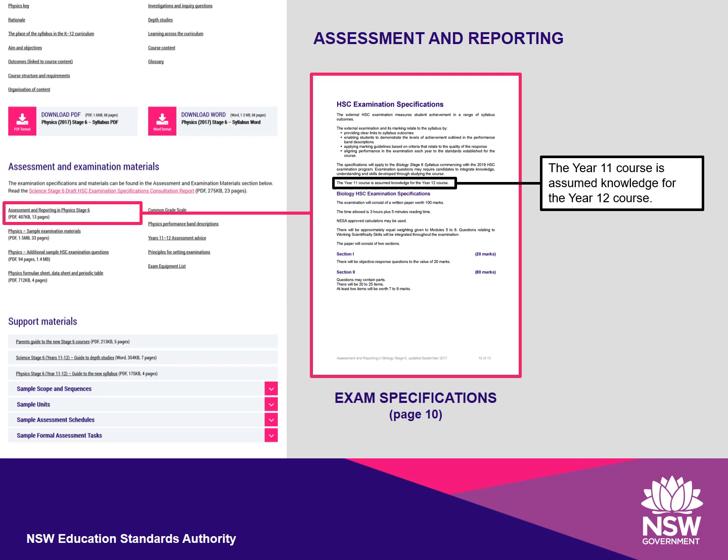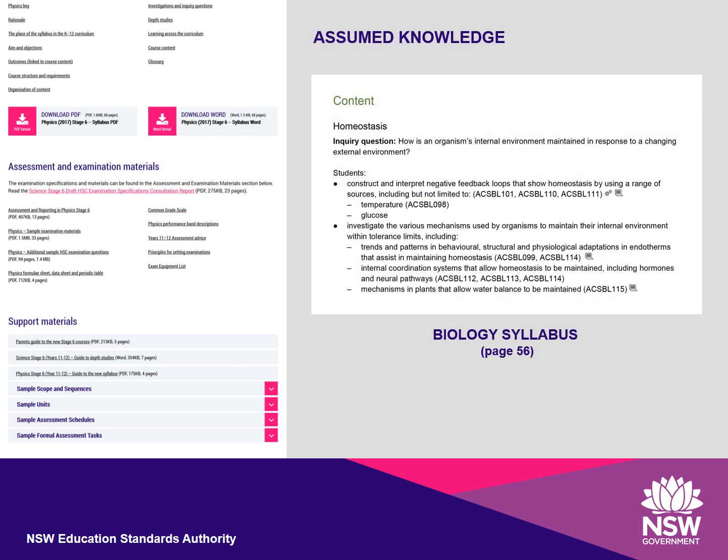Year 11 course is assumed knowledge for the Year 12 course. This means that Year 11 course content forms part of the knowledge required for students to demonstrate a deep understanding of Year 12 content. For example, homeostasis is a conceptually challenging topic in the Year 12 course. Students who have a solid understanding of the structure and function of cells, the nutrient and gas requirements of both cells and organisms, transport systems, and the concept of structural, physiological, and behavioural adaptations to the environment — all covered in Year 11 — will have a fuller understanding of homeostasis. Thus, students may use knowledge gained from their Year 11 course to strengthen their responses to HSC exam questions.